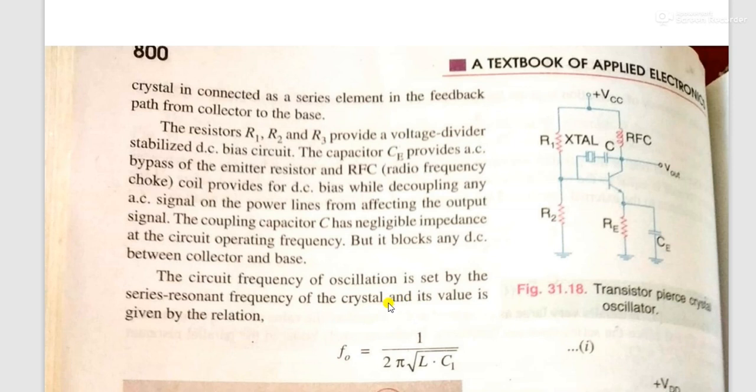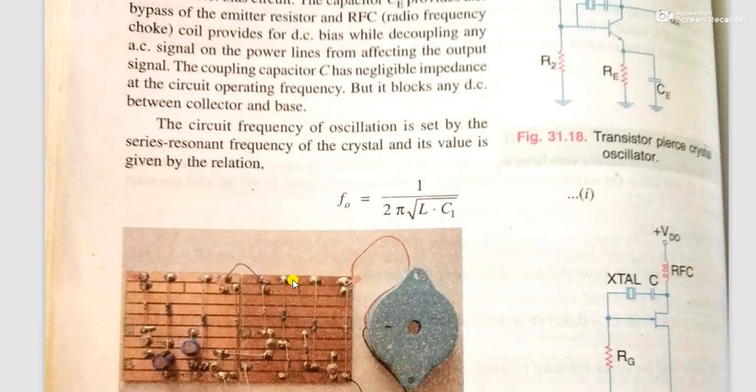Its value is given by the relation: the circuit output frequency F0 equals 1 over 2π times the square root of L times C1.